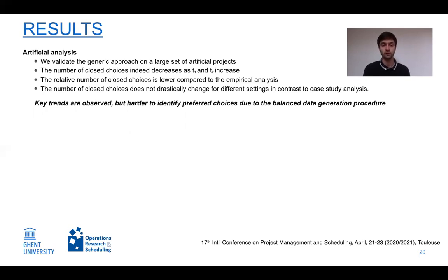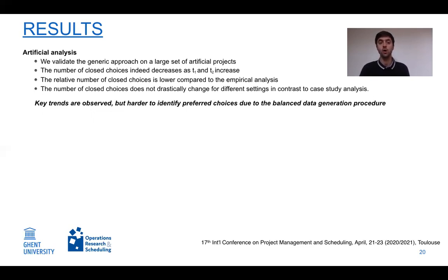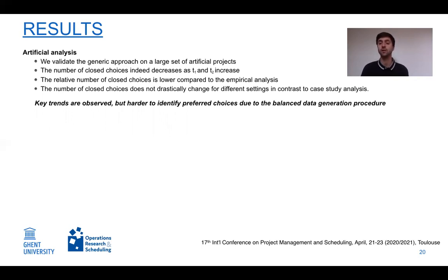We observed that the number of closed choices indeed decreases as T1 and T2 increase — as expected. The relative number of closed choices was lower compared to the case studies, and the number of closed choices is more robust, meaning it does not drastically change for different settings. The key trends from empirical data were validated in artificial data, but it is harder to identify preferred choices in artificial data, likely because the data generation procedure produces more balanced alternatives than in real life.